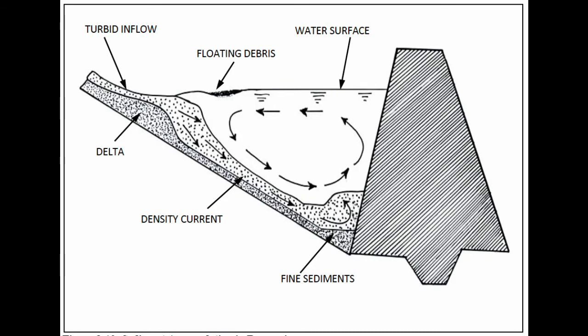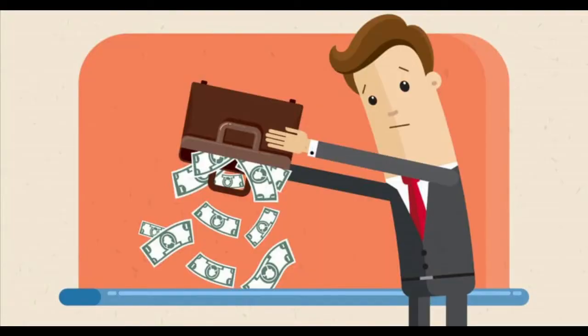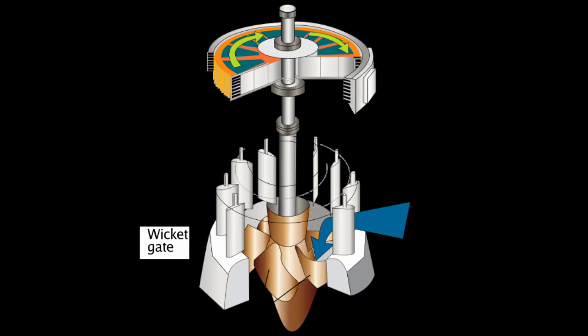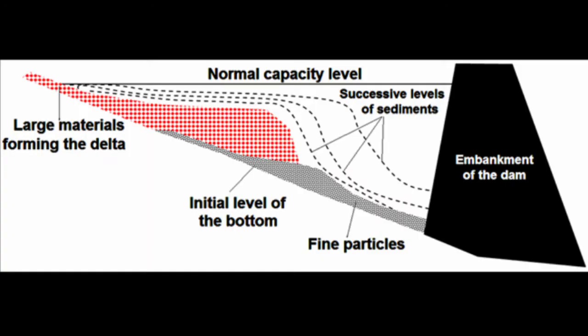As the sediments accumulate, there is a gradual loss of storage, loss of hydropower revenue, as well as damage to turbines and other hydromechanical parts. Sedimentation can cause storage loss ranging between 0.5 to 1% and company damage of nearly 15 billion US dollars.